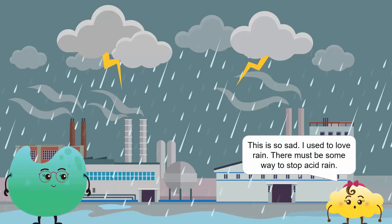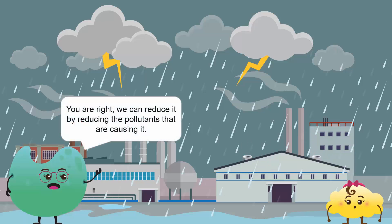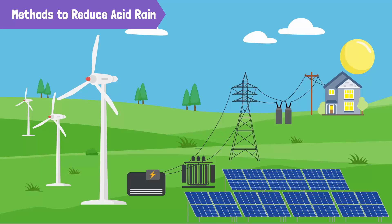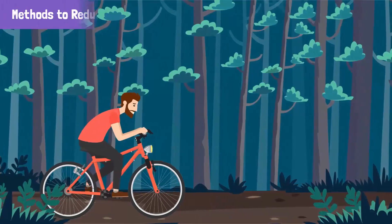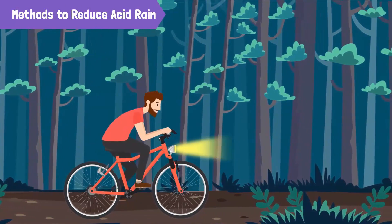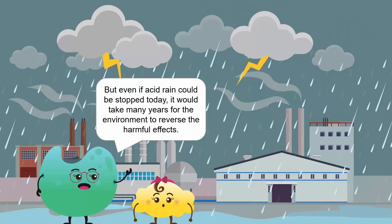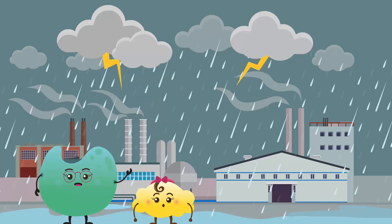This is so sad. I used to love rain. There must be some way to stop acid rain. You're right. We can reduce it by reducing the release of the pollutants that are causing it. This means we need to burn less fossil fuels, as the smoke produced from them is the main cause of acid rain. We should use alternative ways to generate electricity that do not harm the environment — this includes wind turbines and solar panels. We could also walk or travel on bicycles when possible to reduce emissions from our vehicles. But even if acid rain could be stopped today, it would take many years for the environment to reverse its harmful effects. That doesn't mean we should stop trying, though.